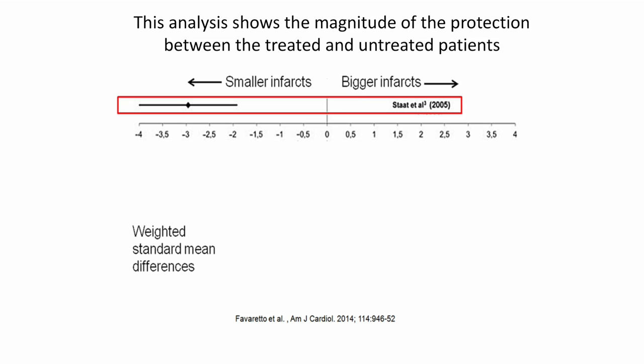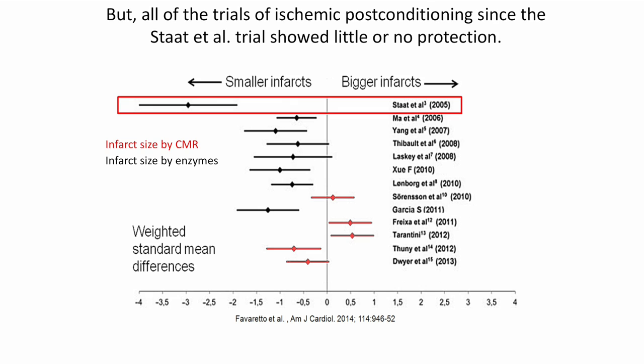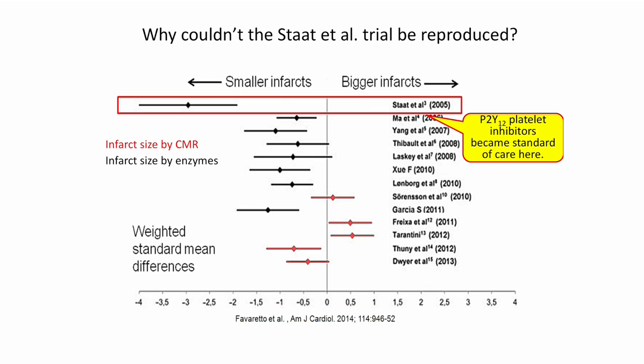We can standardize this using a weighted standard mean difference analysis, which shows over here is no effect, bigger infarcts over here, smaller infarcts over there — and pretty robust responses. This is from a meta-analysis by Favoretto in the American Journal of Cardiology, 2014. Here are 11 studies done to try to reproduce the original STAT study, and you can see a lot of these were negative. A few showed a very small effect, and nobody could reproduce this magnitude of protection from the original study.